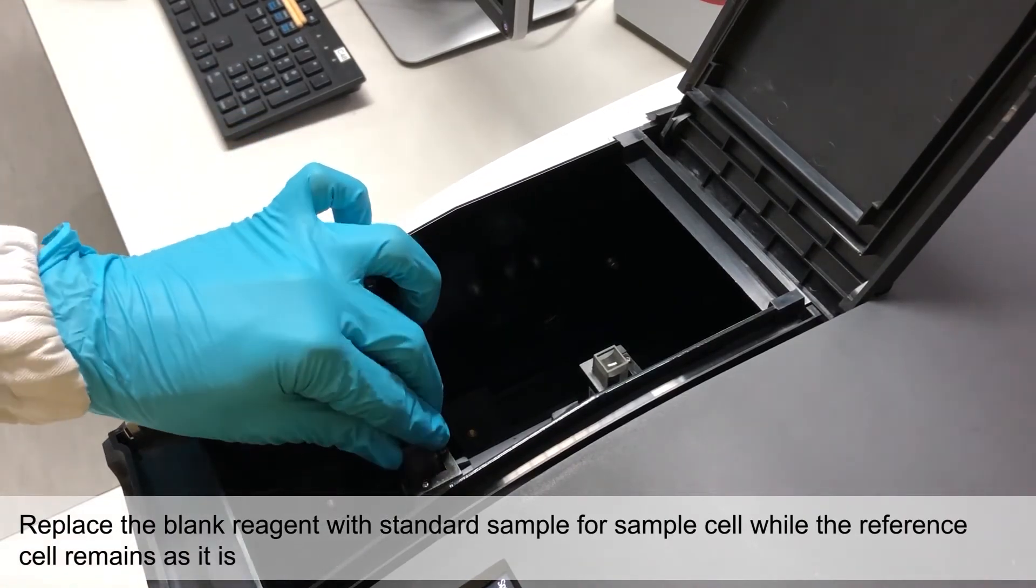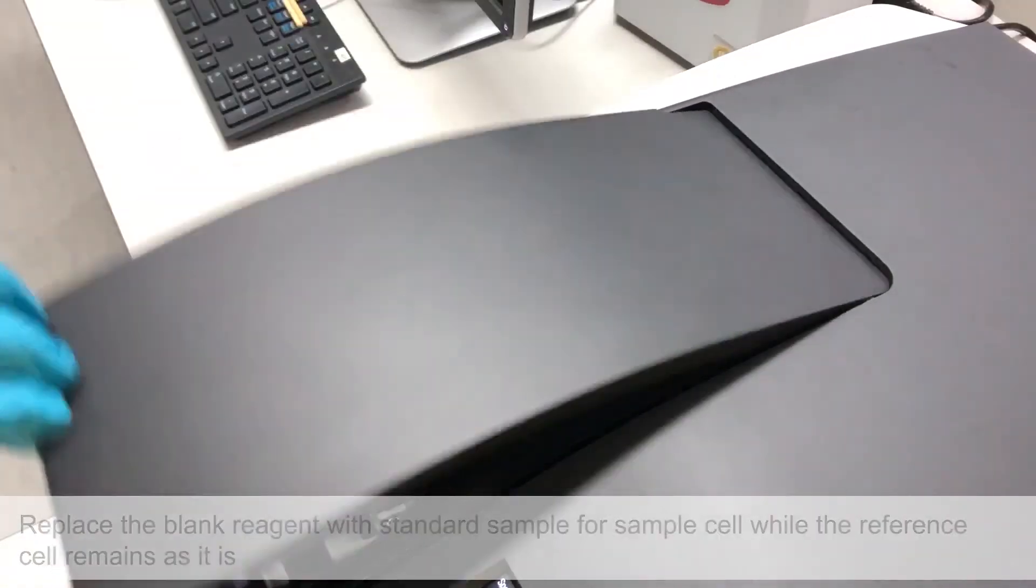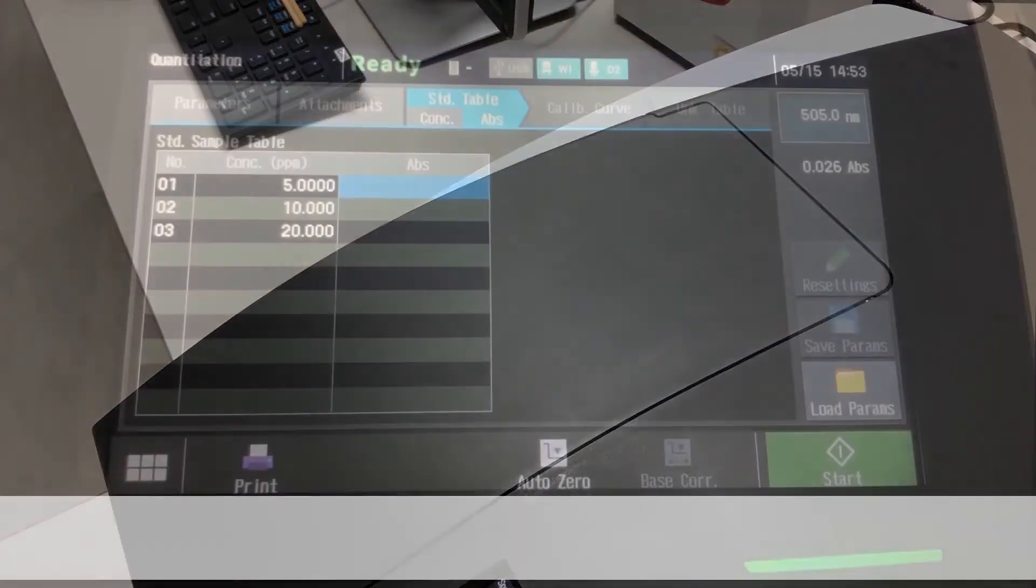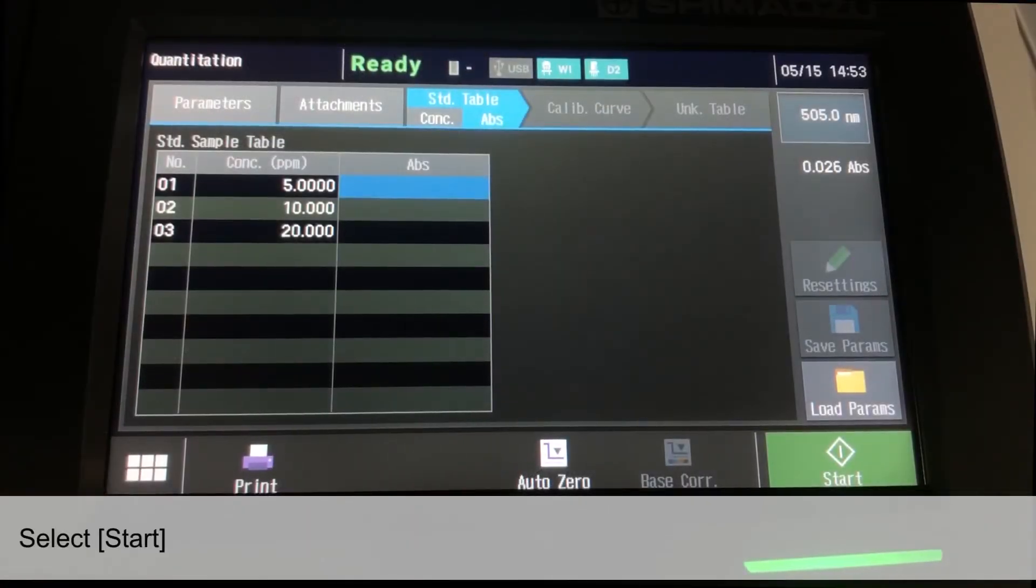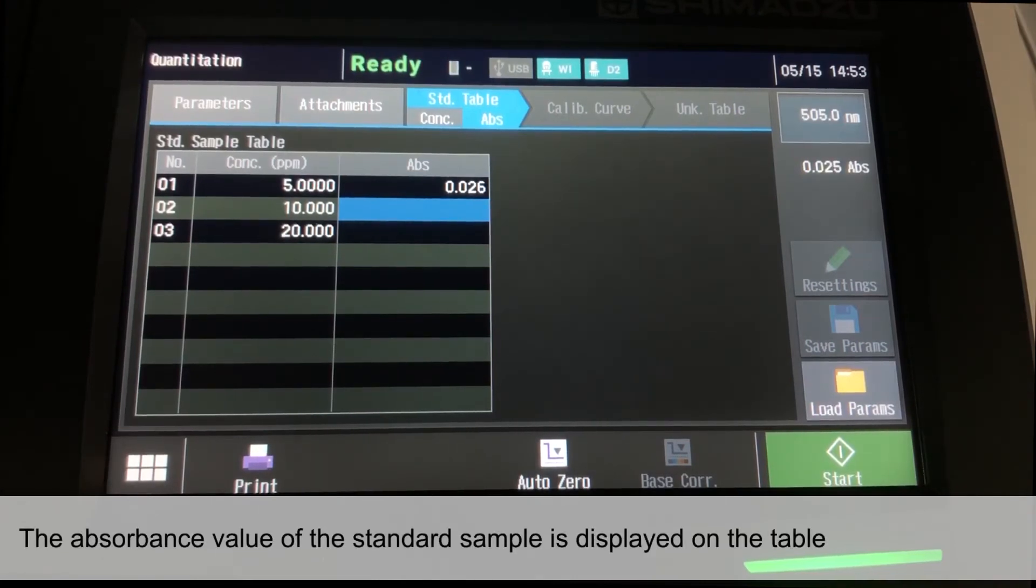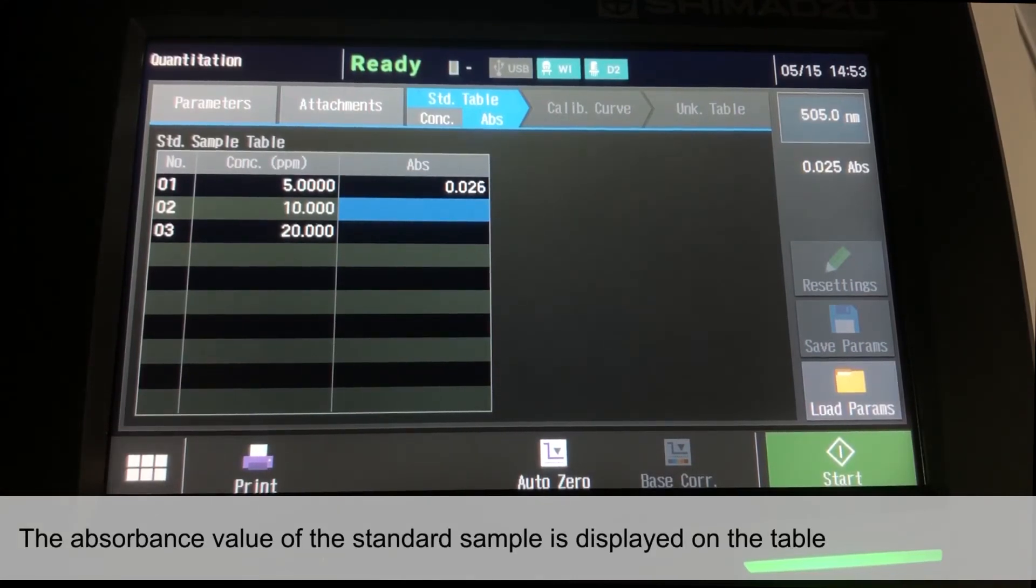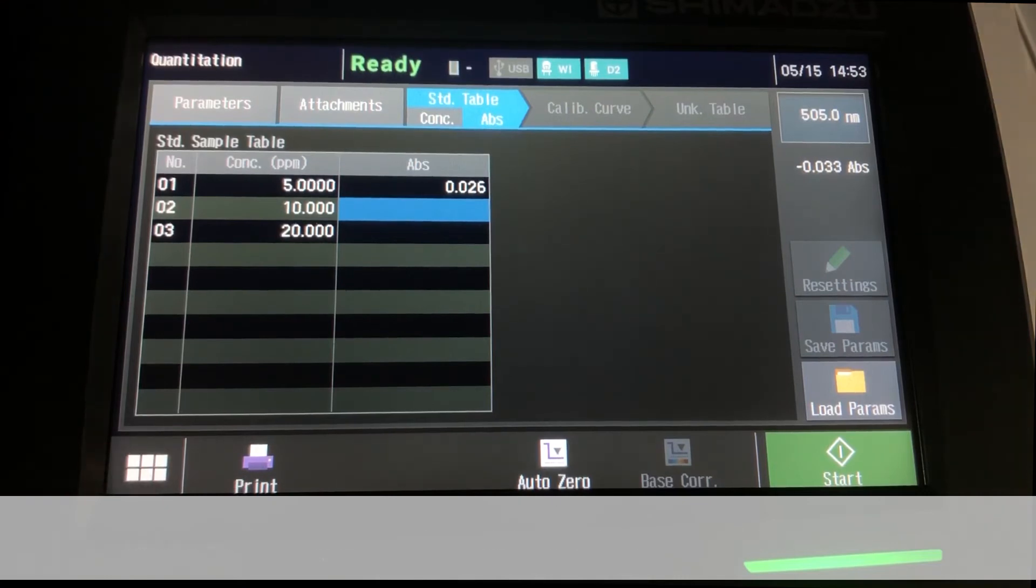The cuvette in the reference cell remains as it is. Select Start to measure the first Standard Sample. The absorbance value of the Standard Sample is displayed on the Standard Table. Measure the remaining Standard Samples.